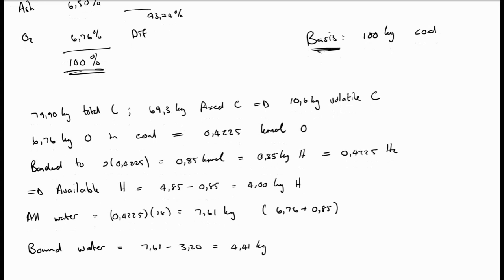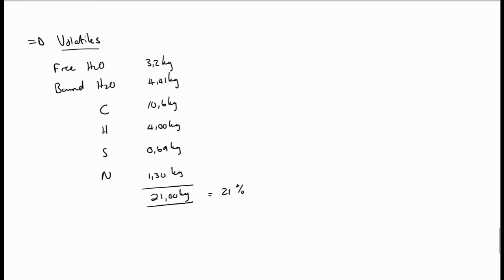Now we know that this is all the water because we have taken all the oxygen which would have been free water, surface water, hygroscopic water and bound water to calculate the amount of water. If we now subtract the free water, the 3.20 kg from the 7.61 kg we get the amount of bound water as 4.41 kg.